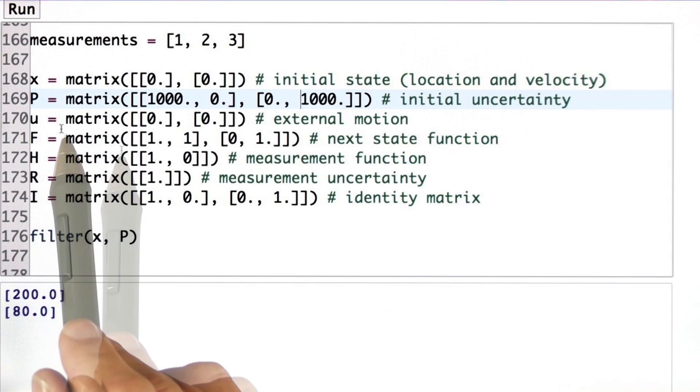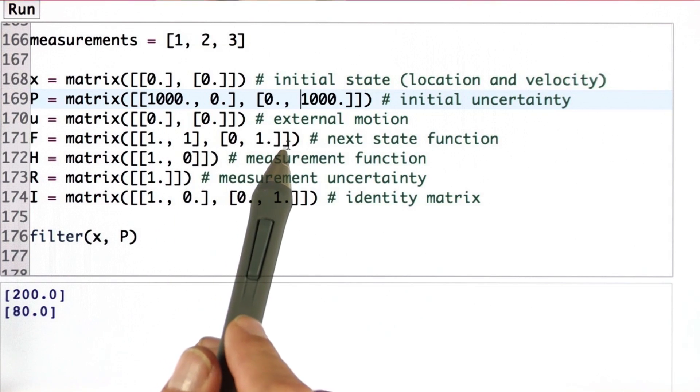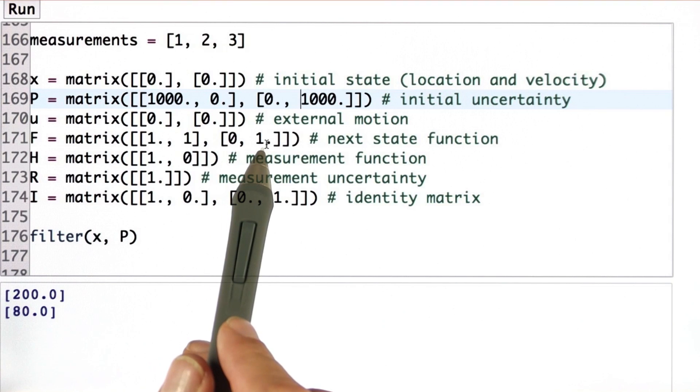I specify an external motion, but it's 0, 0, so it has no effect. So just ignore this. I build a next state function, which is the one we just discussed, 1, 1, 0, 1.